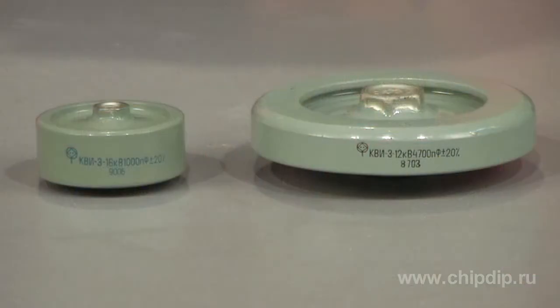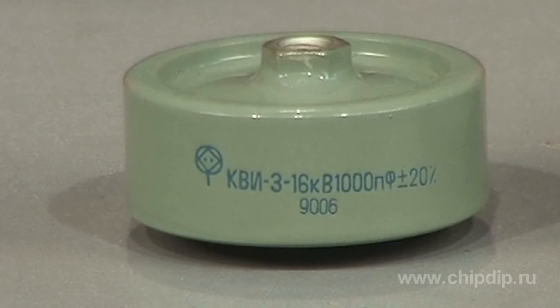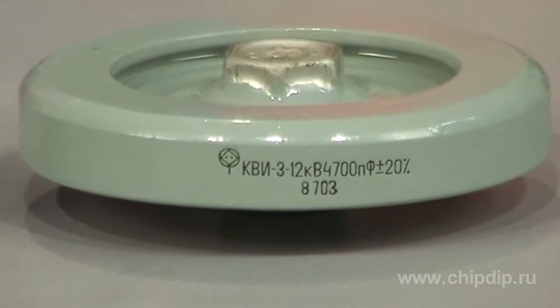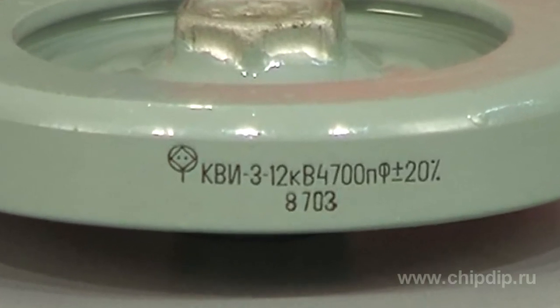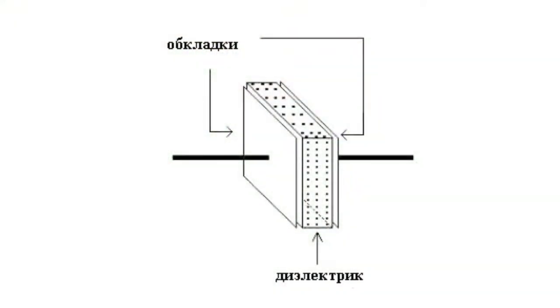KVI capacitors are quite widely spread on the market and are well known to the public. The abbreviated name can be easily deciphered. It simply means high voltage pulsed capacitor. These are ceramic capacitors. The design is classical with two armatures divided by a dielectric.